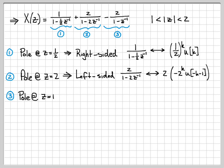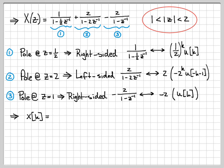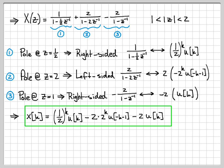For the third term, the pole is at z = 1, which is on the inner edge of the region of convergence. To intersect the overall ROC I need to go outward, so I choose a right-sided signal again. For (negative 2)/(1 minus z⁻¹), the right-sided signal corresponding to 1/(1 minus z⁻¹) is 1^k · u(k) = u(k). So the final discrete-time signal x(k) is the sum of the three terms: (one-half)^k · u(k) minus 2·(2)^k · u(minus k minus 1) minus 2·u(k).